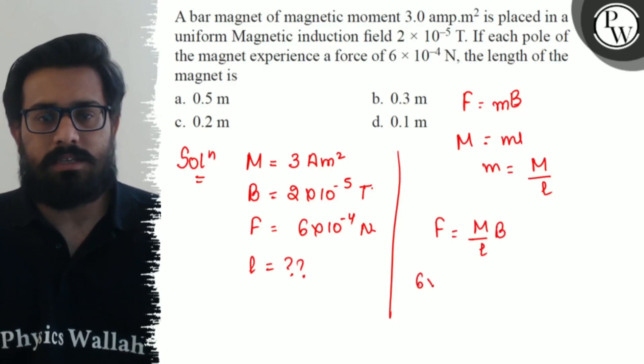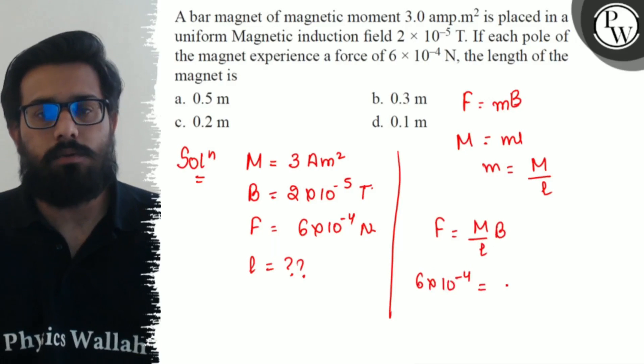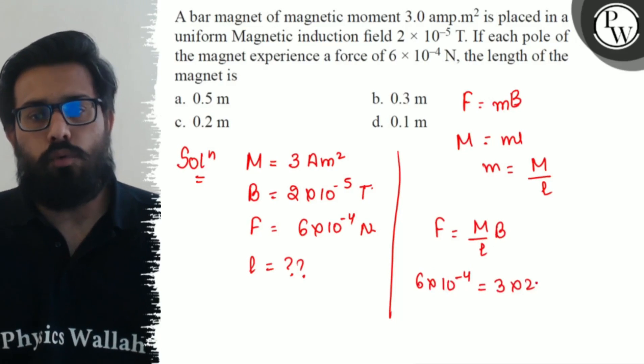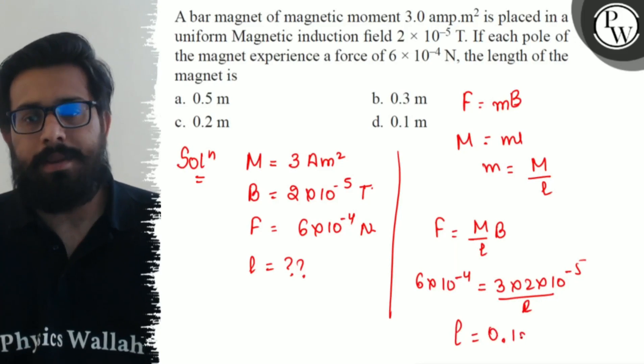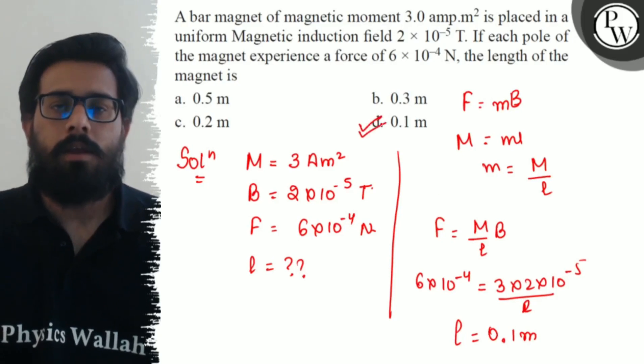Now putting the value, 6×10⁻⁴ equals 3×2×10⁻⁵ upon length. Solving it further, we get a value of length as 0.1 meter, which is option number D.